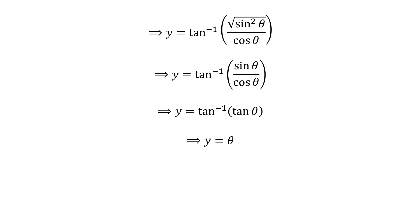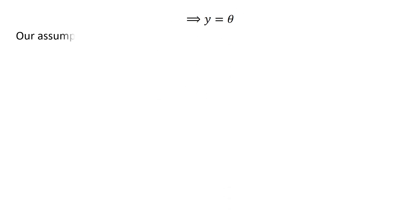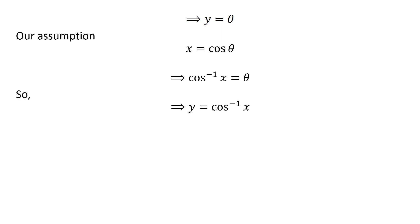Application of inverse function properties gives us y is equal to theta. As per our assumption x is equal to cosine of theta, application of inverse function properties implies theta is equal to inverse of cosine of x. So the above statement implies y is equal to inverse of cosine of x. Thus, simplification of inverse of tangent of square root of 1 minus square of x upon x is inverse of cosine of x.